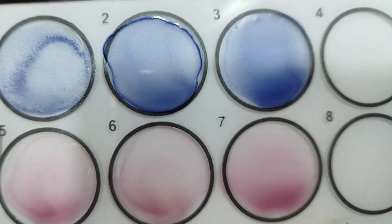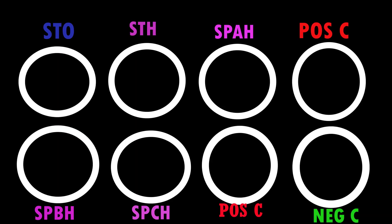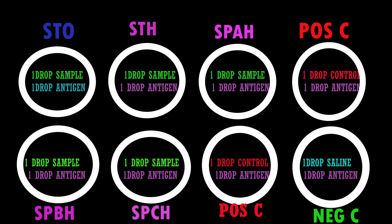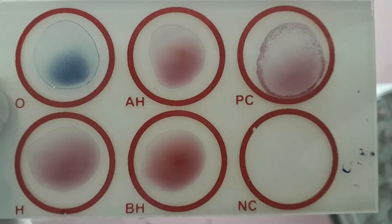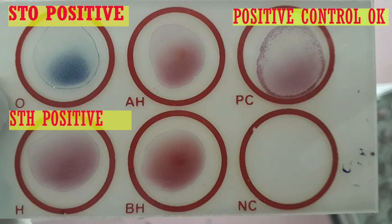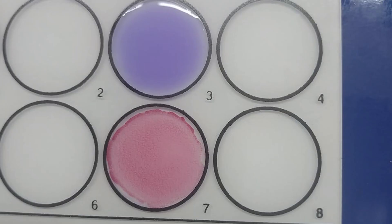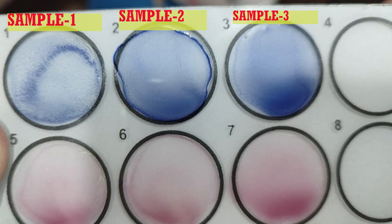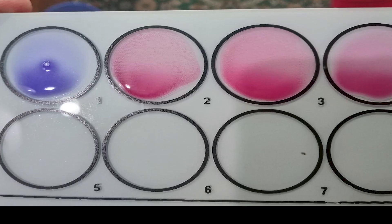Slide Screening Method: Label the reaction circles as STO (Salmonella typhi O), STH, Salmonella paratyphi AH, SPBH, SPCH, positive control, and negative control. Place one drop of positive control onto the positive control circle and one drop of physiological saline onto the negative control circle. Add one drop of serum to each of the other circles. Add one drop of the appropriate antigen suspension to the reaction circles containing patient serum, positive control, and negative control. Mix the reagent and serum and spread over the entire circle using separate sticks. Rock the slide gently back and forth and observe agglutination microscopically at one minute. All positive results in the slide test should be confirmed with the tube test to establish whether titers are diagnostically significant.